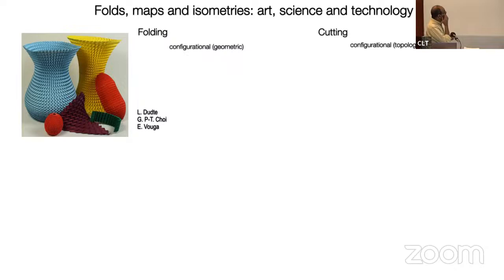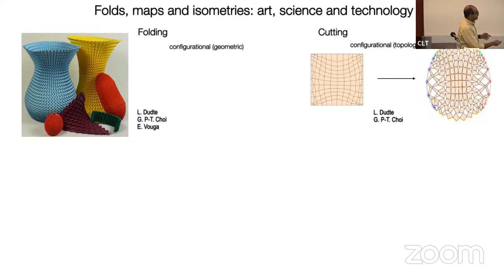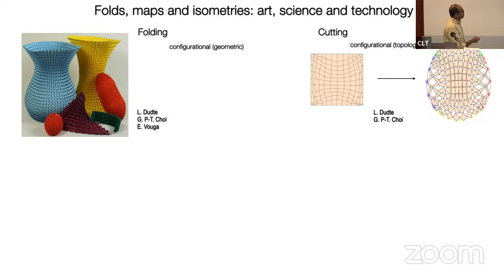Instead of playing with configurational degrees of freedom by controlling angles — which is geometric — you can control connectivity by cutting the paper. If you cut it subtly, not completely, the cuts meet at vertices and the sheet can articulate about these hinges. You can take a flat square, cut it, pull on it, and the whole thing opens up — making an egg or Easter egg shape. So here, instead of geometry via creases, you're playing with topology by changing the connectivity. One approach is more geometrical, the other topological.